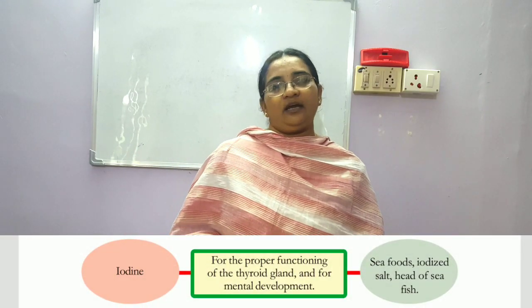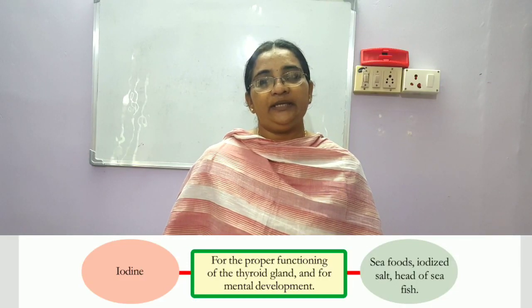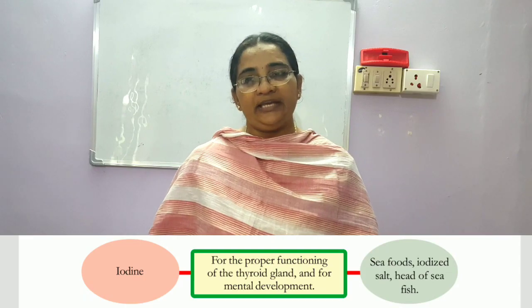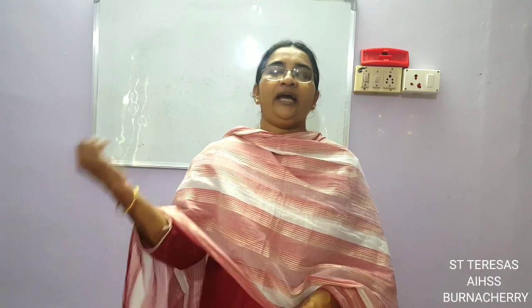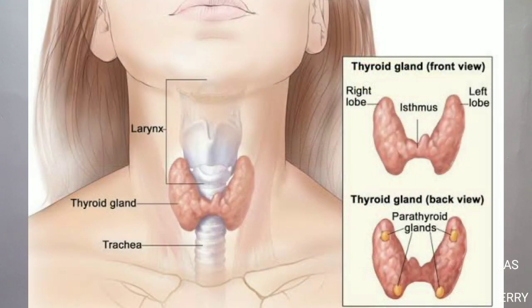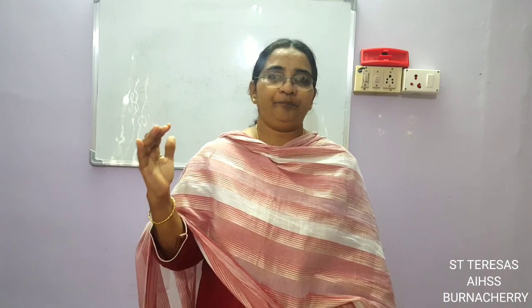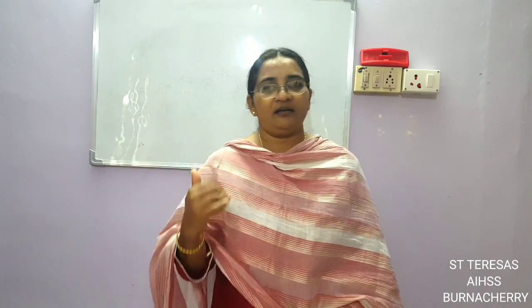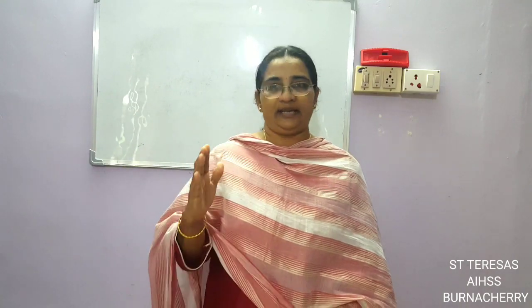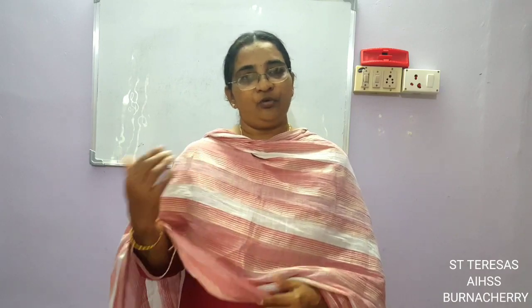Next is iodine. Iodine is needed for the proper functioning of the thyroid gland and for mental development. The thyroid gland is situated inside the throat and it controls all our emotions — anger, sadness, love. If the iodine content goes up or down, it affects the thyroid gland, leading to improper mental disorders.